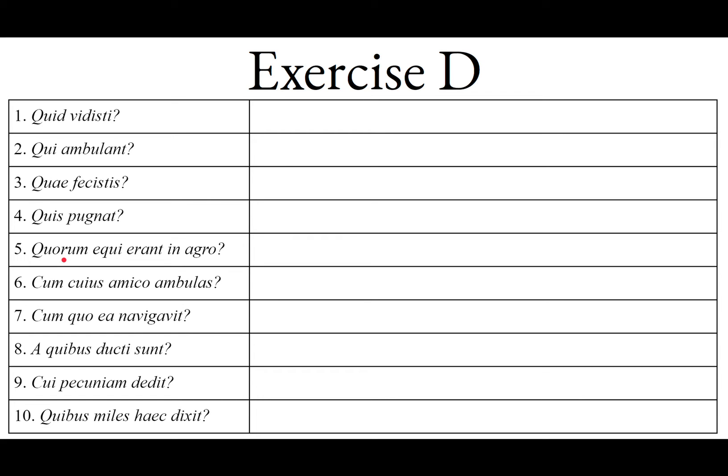Sententia quinta: Quorum equi errant in agro. Quorum is plural and it's genitive — you can tell by the -orum ending — so genitive, plural, masculine. In English we just say 'whose,' which equals 'of whom.' The equi are the horses, nominative plural subject of errant. Quorum equi errant in agro: whose horses were in the field? We're just asking whose horses — the horses of whom were in the field.